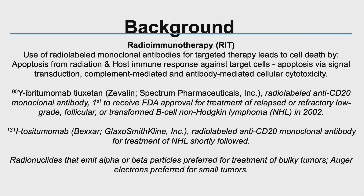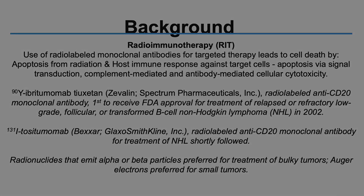Radionuclides that emit alpha or beta particles tend to be preferred for the treatment of bulky tumors, while Auger electrons may be preferred for small tumors.